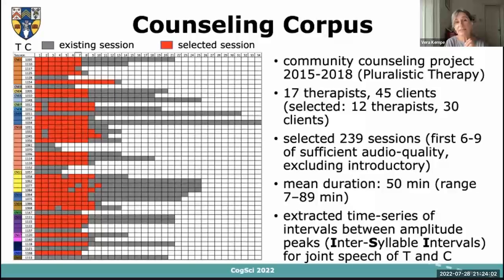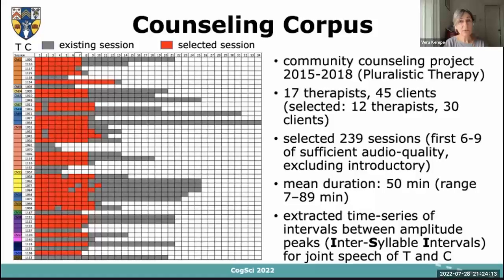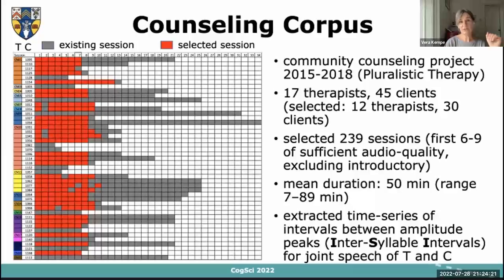From these sessions, we extracted time series of intervals between amplitude peaks — essentially intersyllable intervals — which are indicative of speech rate, but also of pauses and patterns of silence in the session for the joint speech stream of the therapist and the client.